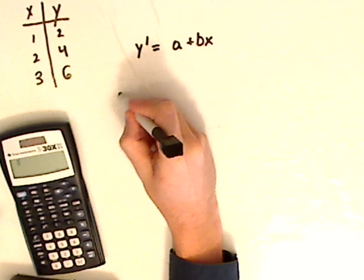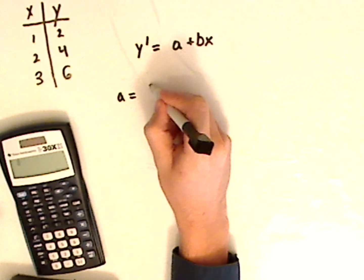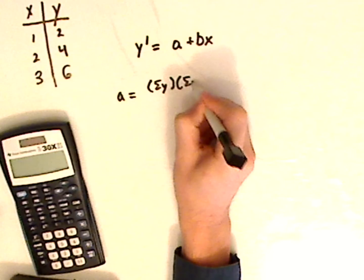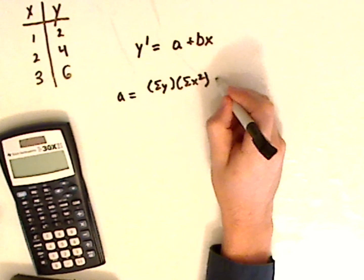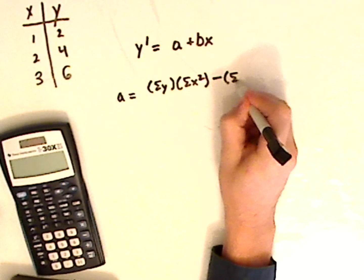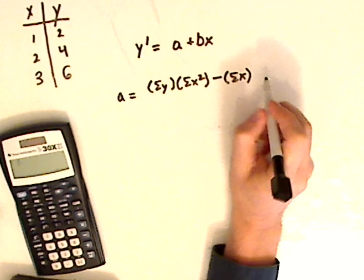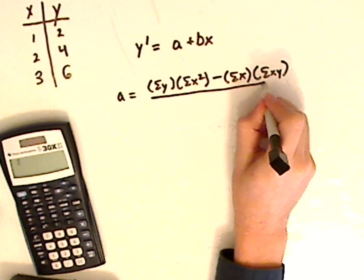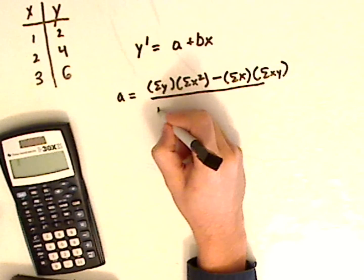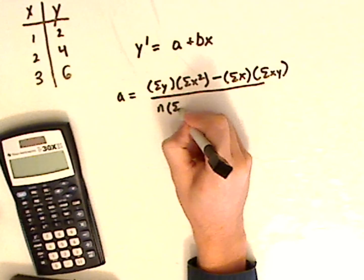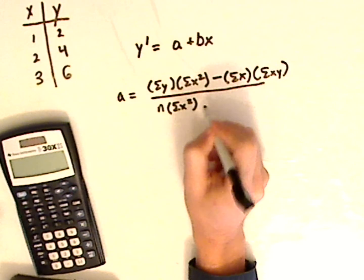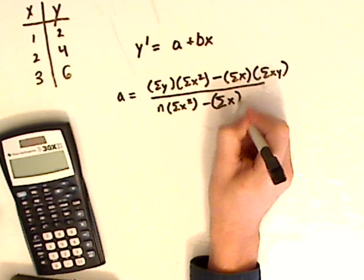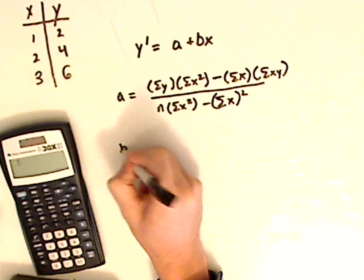Now to find a, here's the formula: the summation of y times the summation of x squared, minus the summation of x times the summation of x times y, over n times the summation of x squared, minus the summation of x, squared.